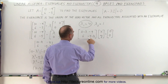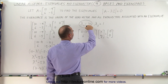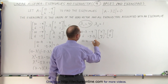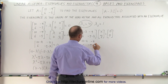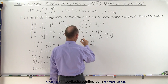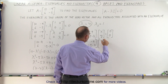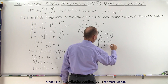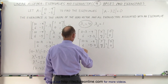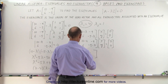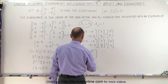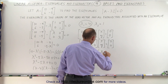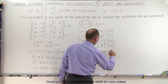We're now going to plug in the associated value for the eigenvalue. So we get (10 − 4), −9, 6, (−5 − 4). We multiply that times the eigenvector [x, y], which is what we're trying to find, and we set it equal to the zero vector. When we solve for this, we get the matrix 6, −9, 6, −9 times [x, y] equals the zero vector.